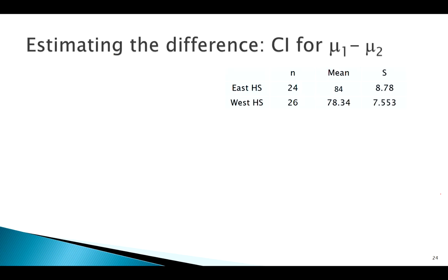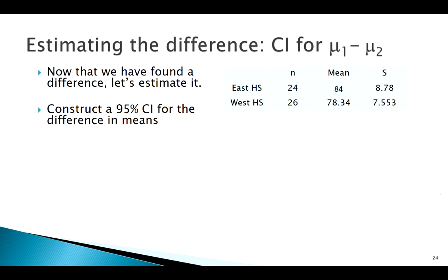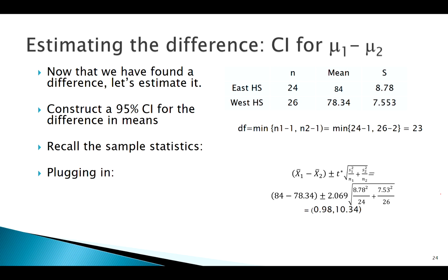Let's estimate that difference with a confidence interval now. So here is our data again. Let's just say 95% confidence interval. So our sample looked like that. Degrees of freedom, we've been using the conservative estimate, that's 23. Remember our formula. Plug in. Do the math.